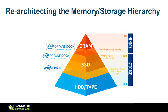Then we have the cold or warm data tier, which contains persistent but non-volatile data. This is far cheaper, but it comes at the cost of performance because normal SSDs or HDDs are accessed through a block storage interface and have to go through the kernel.